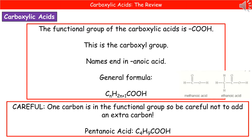When we're talking about the carboxylic acids, all of their names end in 'anoic acid.' So if we had one carbon it would be methanoic acid, two carbons ethanoic acid, and so on.